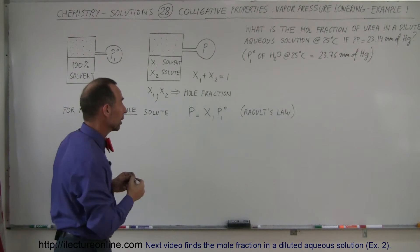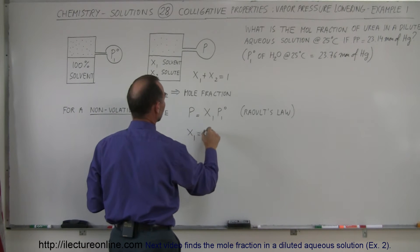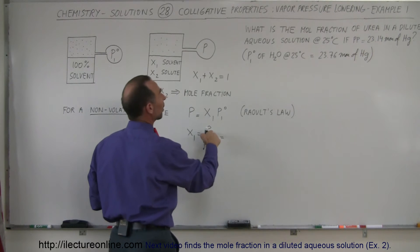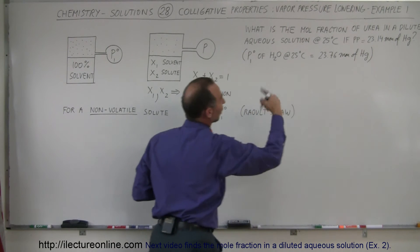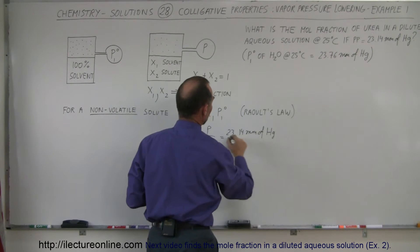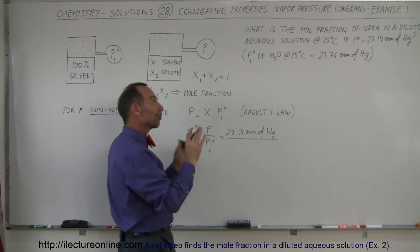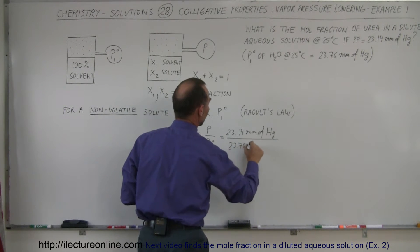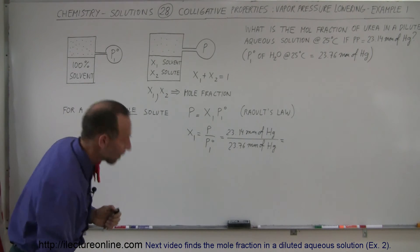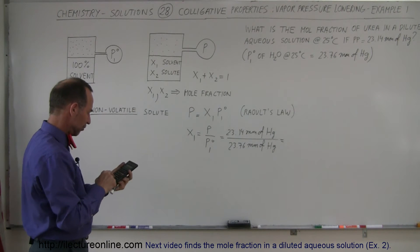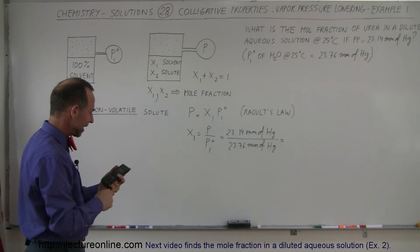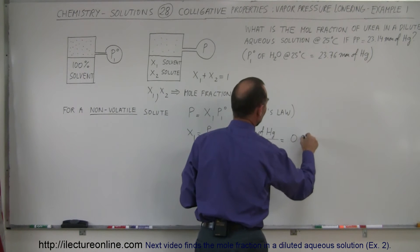So we can say that X1 is equal to P divided by the P1 of the solvent, which is equal to, so the partial pressure of the solution is 23.14 millimeters of mercury, and the vapor pressure of the solvent, the water by itself, would be 23.76 millimeters of mercury. So that fraction will be the mole fraction of the solvent, the water. So we have 23.14 divided by 23.76, and we get 0.974.